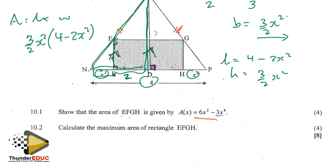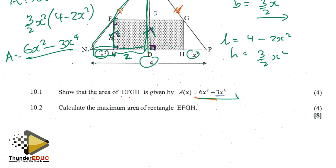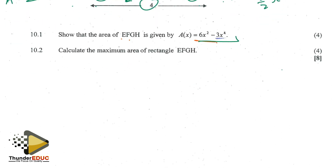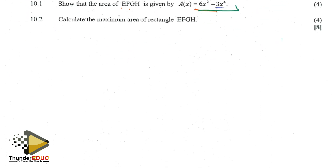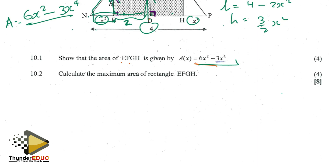Area = (3/2)x² · (4 − 2x²). So 3/2 times 4 gives 6x², minus 3/2 times 2 gives 3x⁴. So the area is A = 6x² − 3x⁴, and that matches what the question gave us.